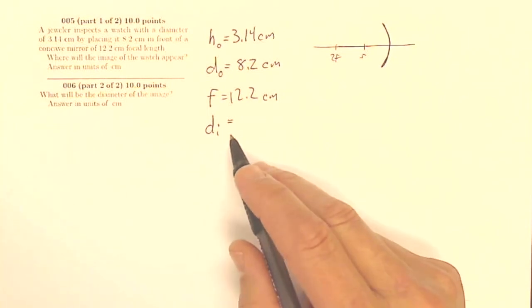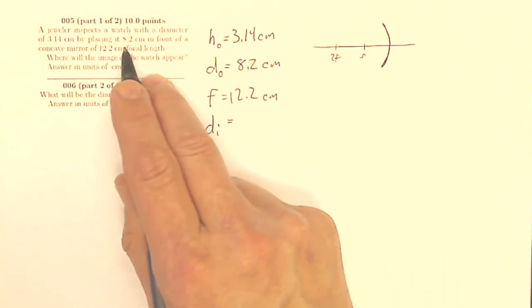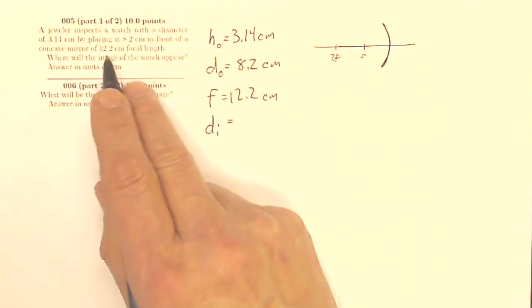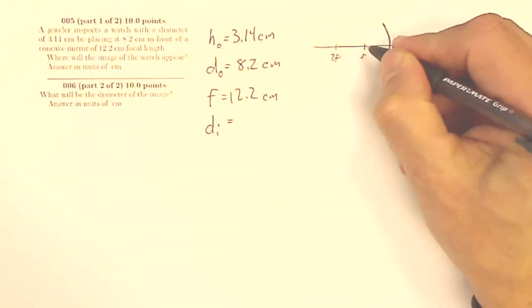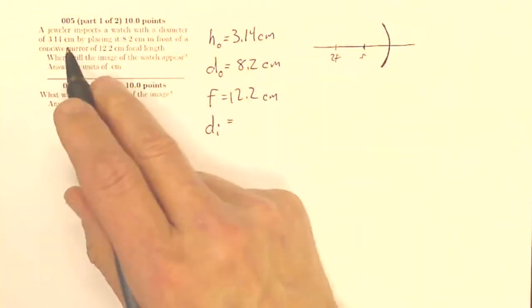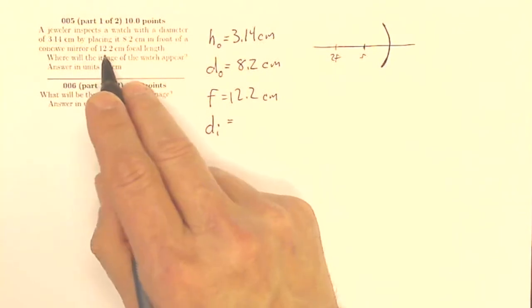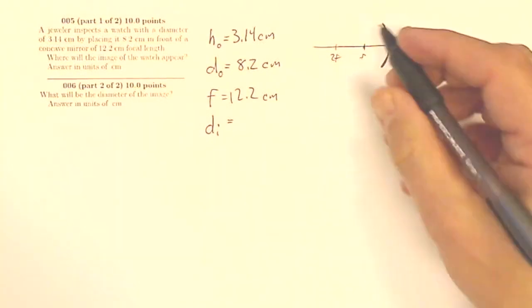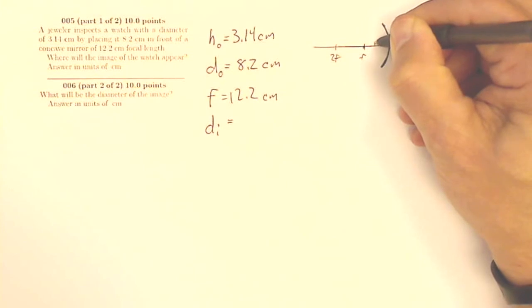Now, I know that if I have something that's 8.2 centimeters in front of a concave mirror of 12.2 centimeters, that means that my focal length is 12.2, and this is only at 8.2. So my object is inside of F. My watch is going to be inside of F.